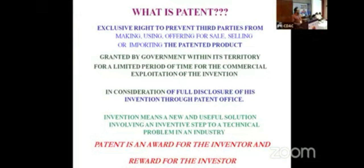A patent is granted for a limited period of 20 years for commercial exploitation. In consideration, full disclosure of the invention must be made through the patent office. If you publish your invention elsewhere first and then ask for a patent, the patent cannot be given. When I was at the patent office, many cases came from Kerala — people holding press conferences about their inventions. If it's already disclosed to the public, it's in the public domain and exclusivity cannot be granted.